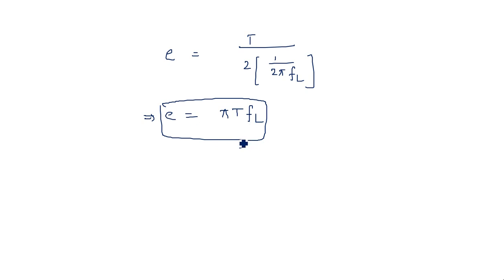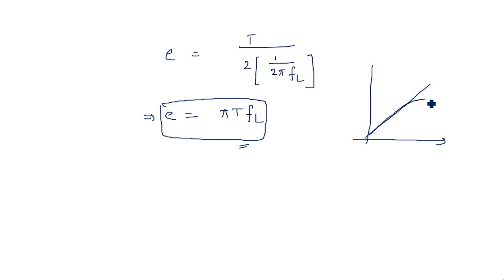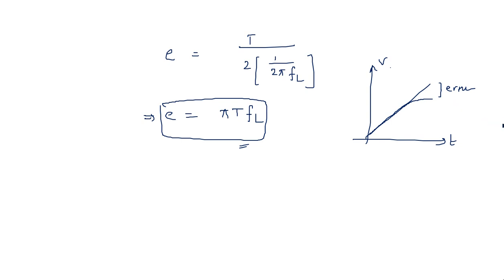The error represents the deviation between the input signal and the output signal. We expect the input to follow a linear ramp, but the output deviates from it. The error is calculated as E = (V_in − V_out) / V_in. This concludes the analysis of the ramp signal applied to the high-pass RC circuit.